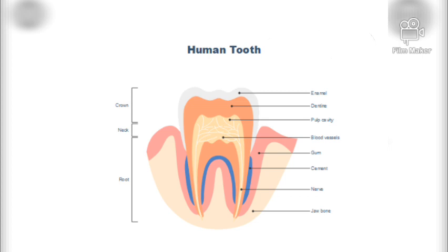The neck consists of the gum line, and the root consists of the pulp cavity and blood vessels. Blood vessels circulate the blood, and cementum holds the teeth in the socket of the jaw.